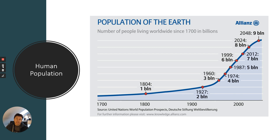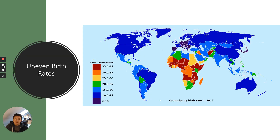An increase in human population will mean challenges of producing enough food to feed everybody and ensure that nobody starves. You also have to take into account that there is an uneven birth rate. In more developed countries — particularly Europe, North America, parts of Russia, Australia, and Brazil — birth rates are decreasing, whereas they are still increasing in places like Africa, the Middle East, and parts of South America. This creates issues related to getting food where it is needed, because currently we do produce enough food worldwide to feed everybody.